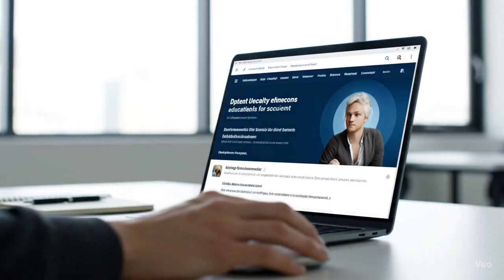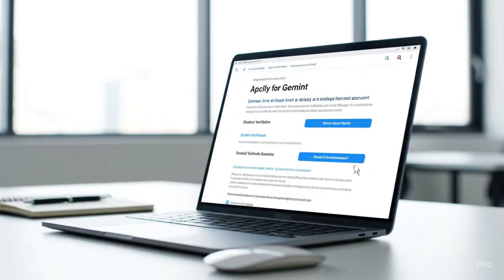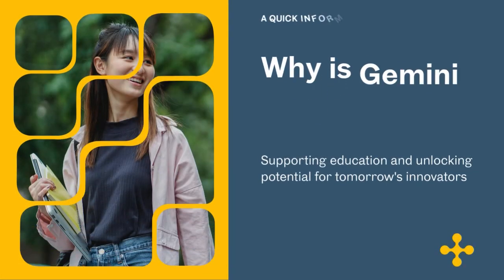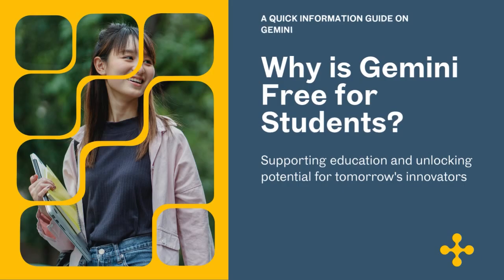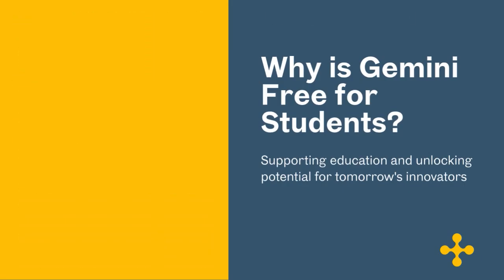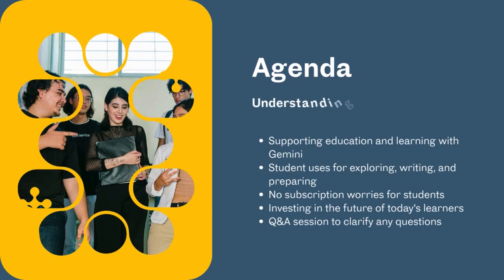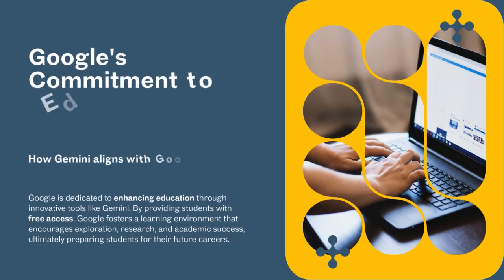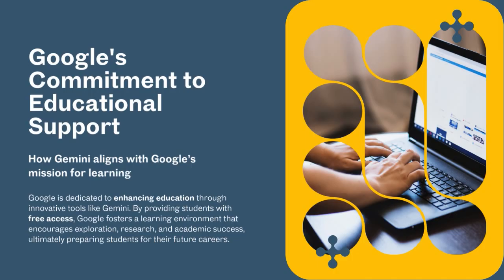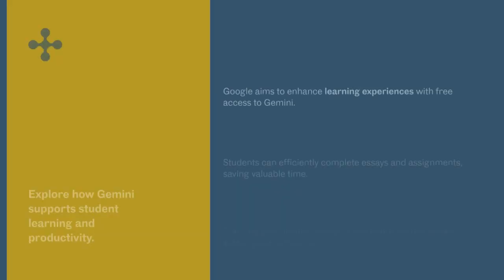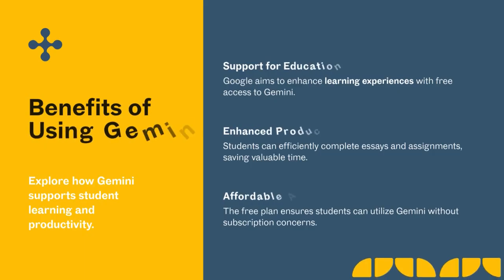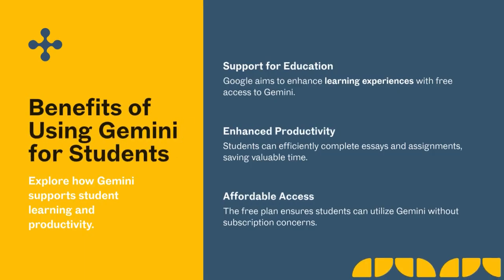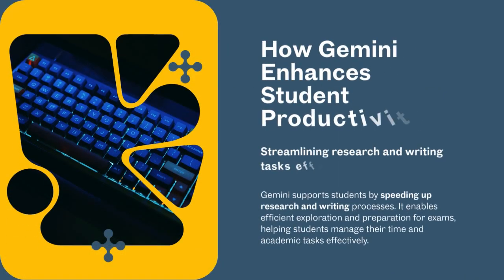We need time to focus on understanding instead of just typing. Here are some pro tips to get the most out of Gemini. Be specific in your prompts — instead of saying 'help with history,' say 'explain the two causes in under 200 words for a high school essay.' Use Gemini directly inside Google Docs to polish your writing. Save your favorite prompts so you can reuse them later. Combine Gemini with Google Scholar for accurate academic sources. And that's it — Gemini is free for students, and it's one of the most powerful tools you can use right now to boost your productivity.